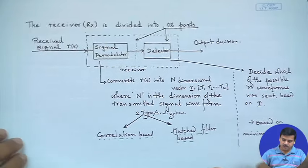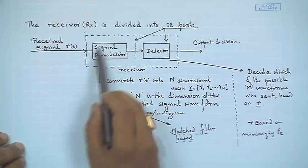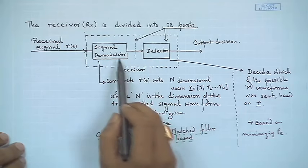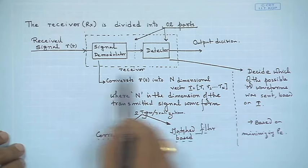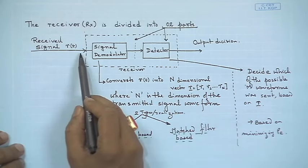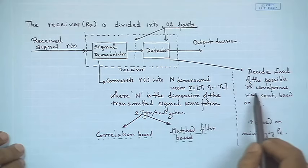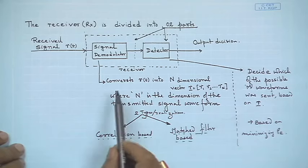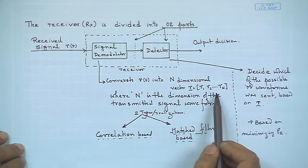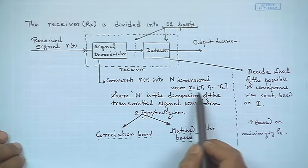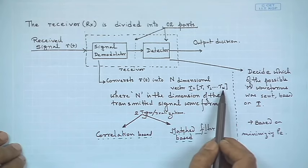We looked at the receiver architecture where the received signal is first demodulated — it goes through a demodulator and then through the detector. You have typically studied demodulators in analog communications and will see similarity here as well. Together they form the receiver: it takes the received signal and produces an output decision about which of the possible waveforms was sent. The demodulator converts R(t) into an N-dimensional vector, decomposing R into R₁, R₂, up to R_N, where N is the dimension of the transmitted signal.